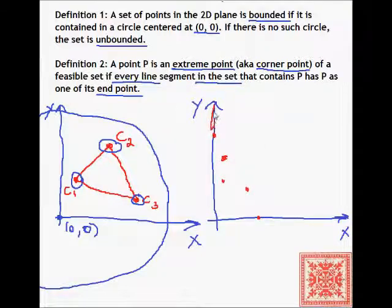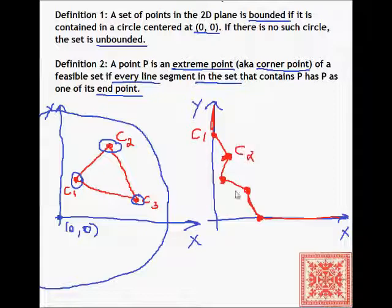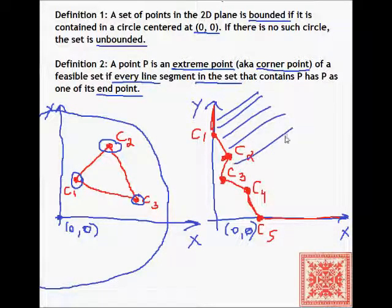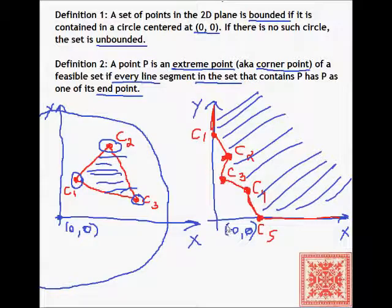Now let's construct an unbounded set with corner points C1, C2, C3, C4, C5. This is the border of our feasible set. The feasible set on the right cannot be bounded with a circle — we cannot find a radius of a circle that will bound it because it's unbounded; there is no such circle.